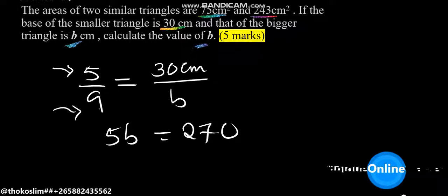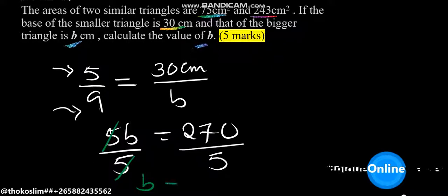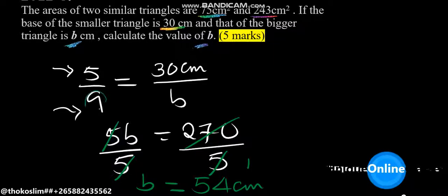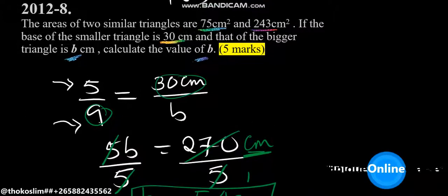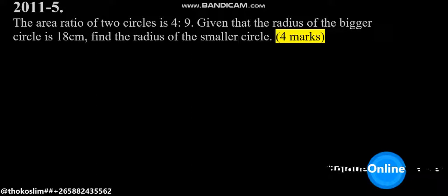We're going to divide both sides by 5 here as well. The 5s will cancel, leaving us with the remaining terms. 5 into 270 gives the answer 54 cm. So our value of B is 54 cm — that's the answer to that question. Then the next example.